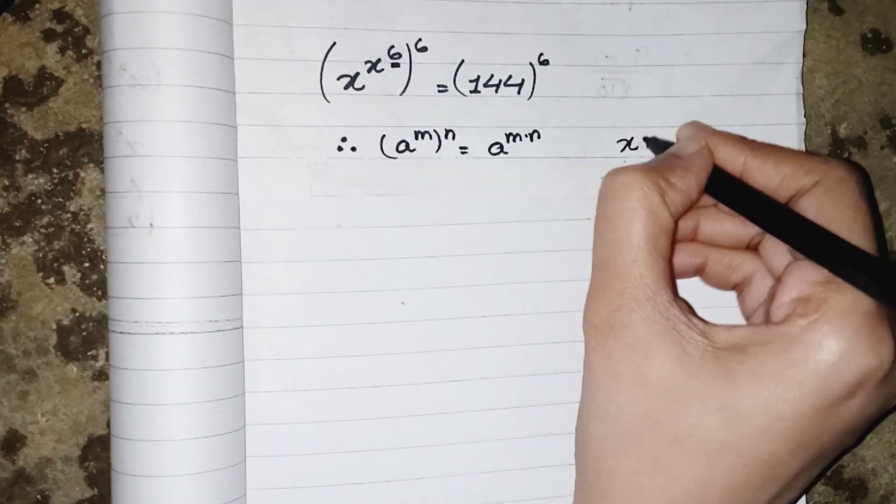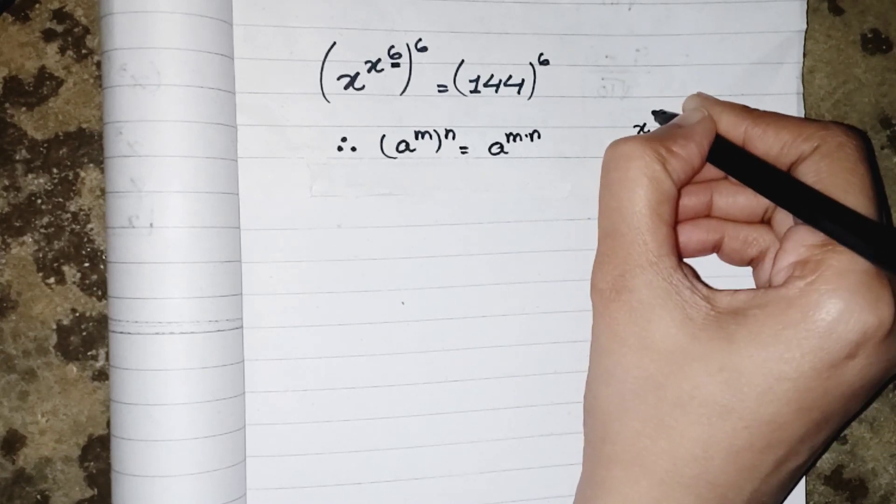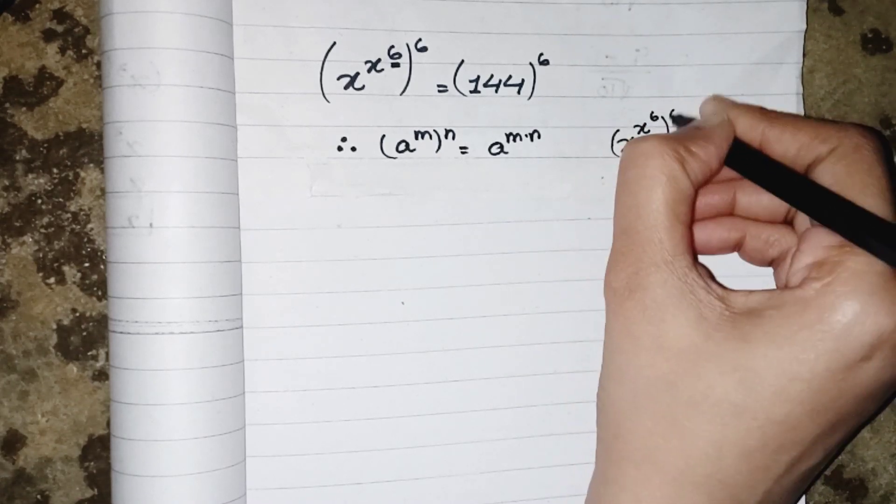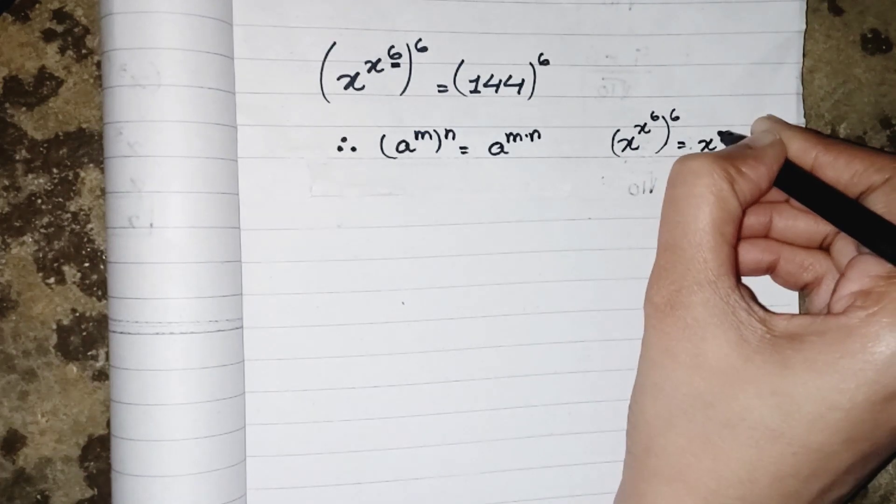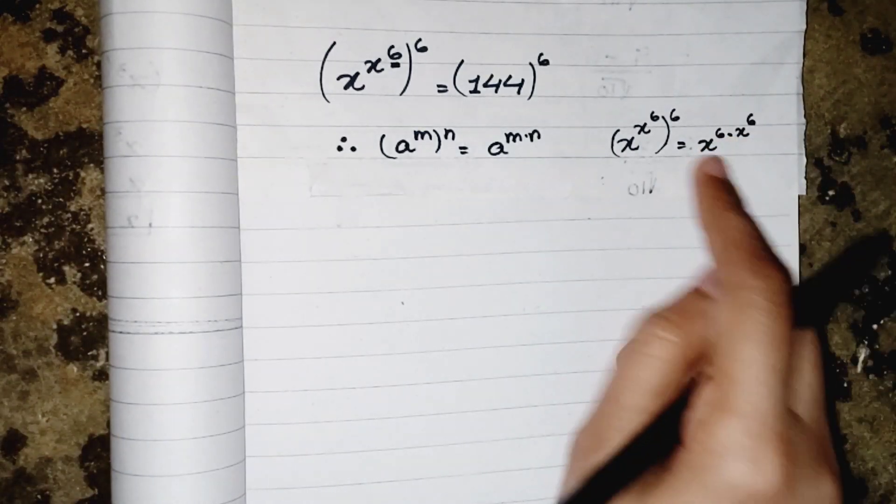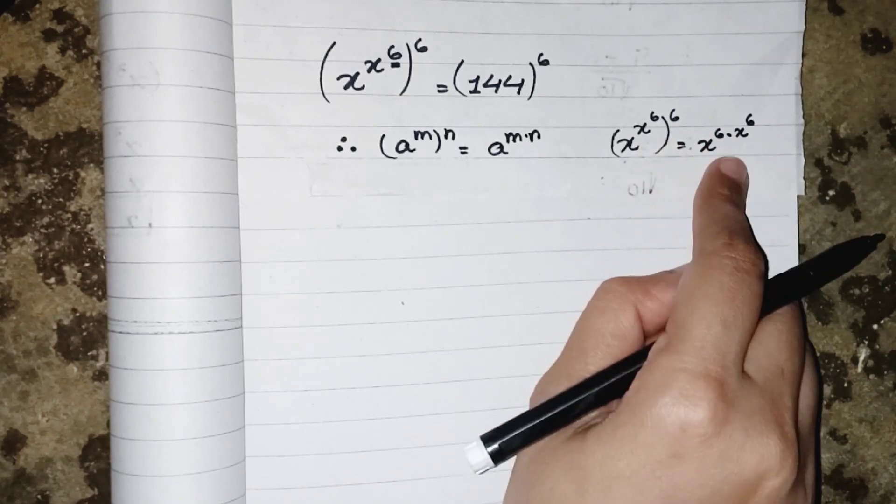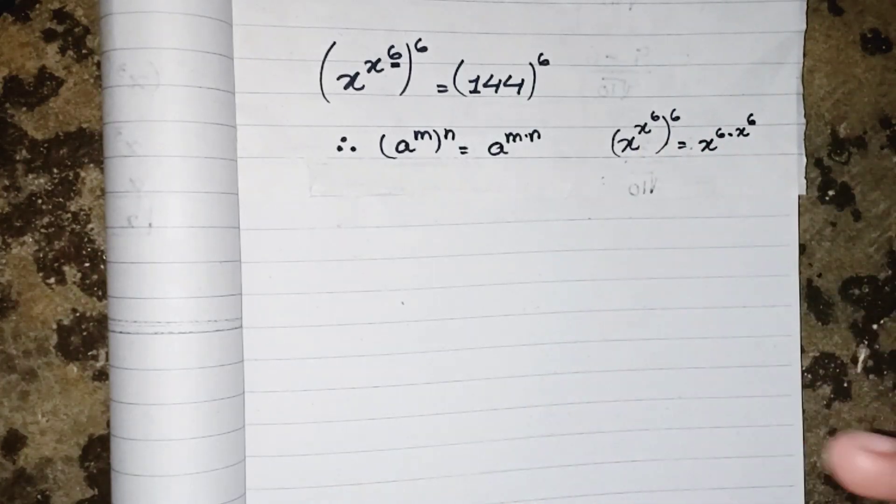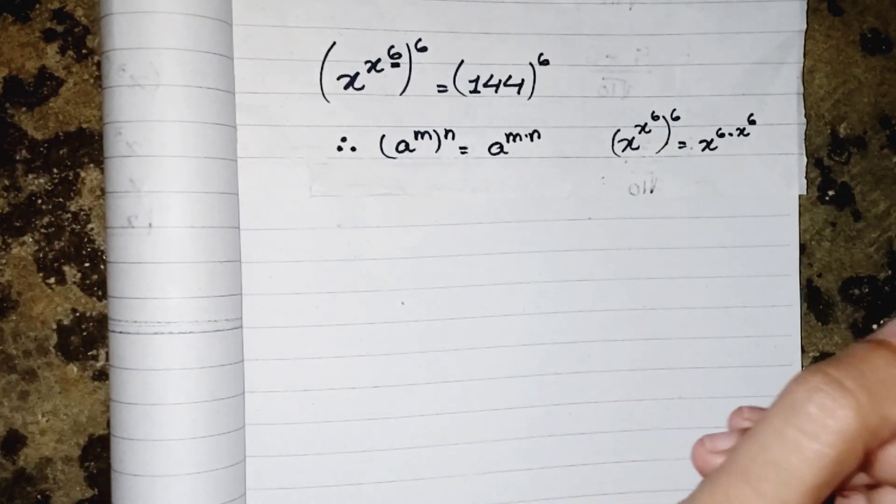So we can say that (x^(x^6))^6 equals to x^(6 × x^6). These both powers will be multiplied to each other. Remember that it's a trick in all kinds of these questions—whatever power we have, either it's square, cube, 4, 5, 6, 10,000, whatever, we have to multiply by the same power.